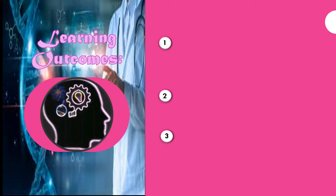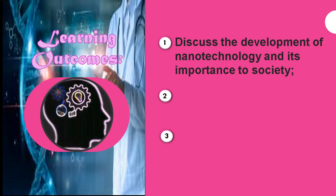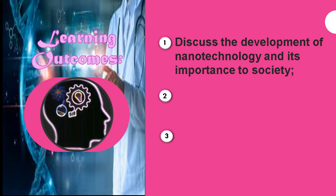What are the learning outcomes for today's discussion? At the end of the lesson, the student should be able to: first, discuss the development of nanotechnology and its importance to society; second, explain the use of nanotechnology; and lastly, analyze the implications of nanotechnology. So let us present our signal as we discuss the development of nanotechnology and its importance.